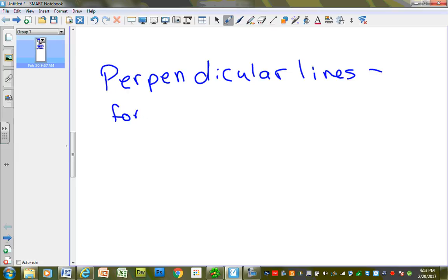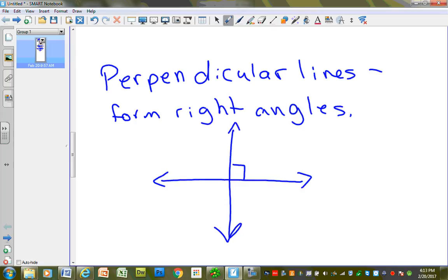So they form right angles, and I'm going to draw a little sketch here. I want you to put that in your notes. When they intersect, they intersect in a special way. All of these angles are right angles right here. So it kind of looks like this. They're all 90 degrees.